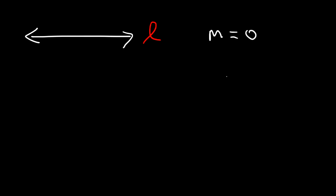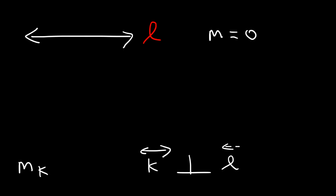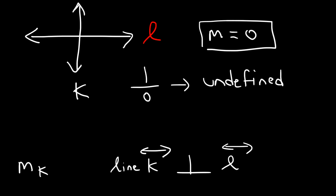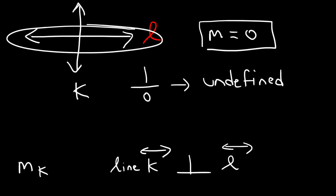Now let's say that line L has a slope of 0. What is the slope of K, where line K is perpendicular to line L? A horizontal line always has a slope of 0. To find the slope of a perpendicular line it's going to be 1 over 0, which is undefined. So the slope of any vertical line is always undefined, and the slope of a horizontal line is always 0.